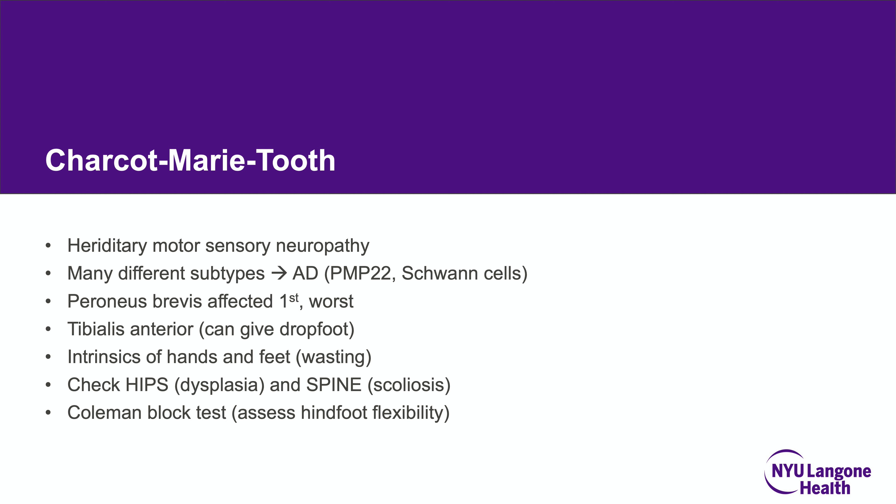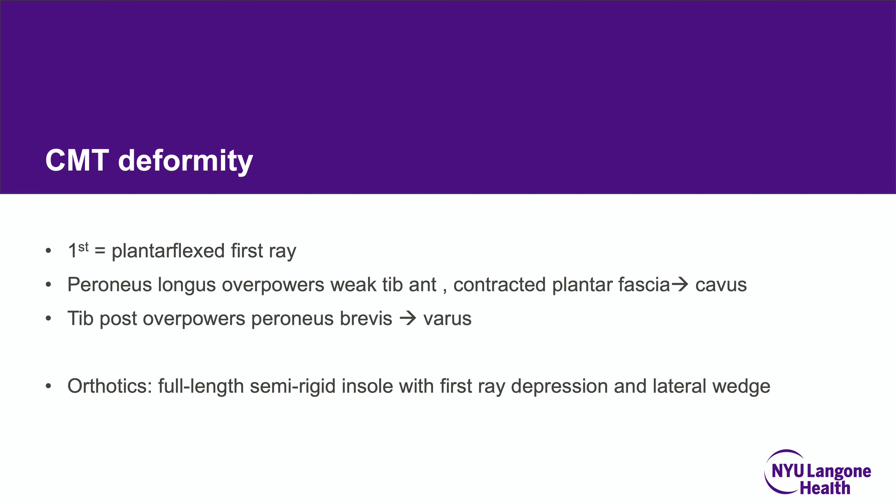Perform the Coleman block test to assess hindfoot flexibility — critical if planning surgery. Patients tend to get a plantar-flexed first ray. The Coleman block test assesses whether the deformity is forefoot-driven from the first ray or hindfoot-driven from the calcaneus. In fixed varus, the peroneus longus overpowers the weak tibialis anterior, the plantar fascia becomes extremely contracted perpetuating the cavus, and the tibialis posterior overpowers the peroneus brevis causing varus. Early treatment with a full-length semi-rigid insole, depressing the first ray and adding a lateral wedge, is favored — boards frequently test these orthotics questions.